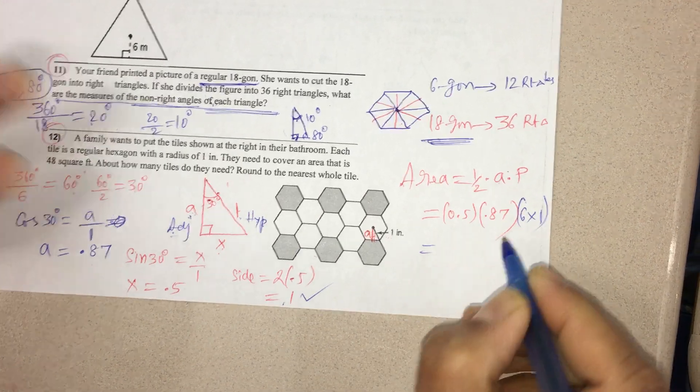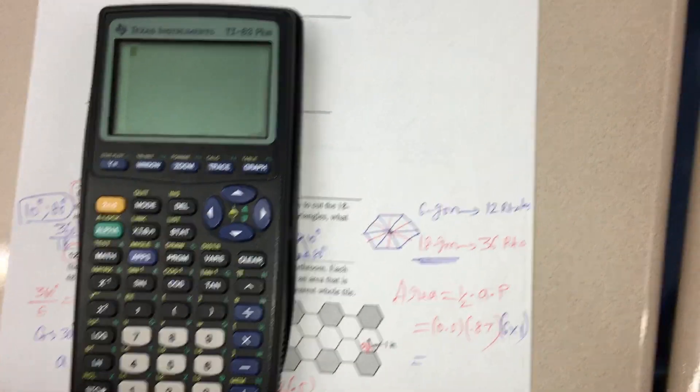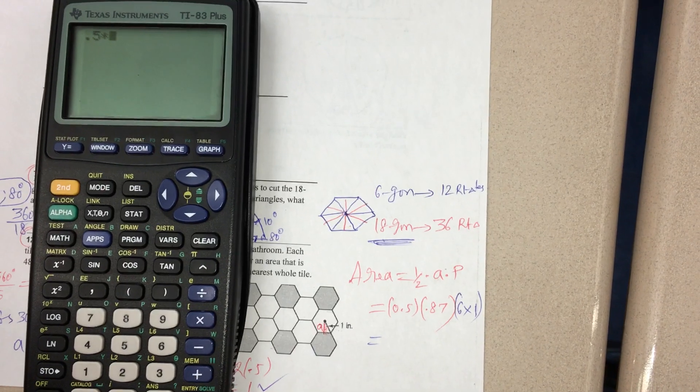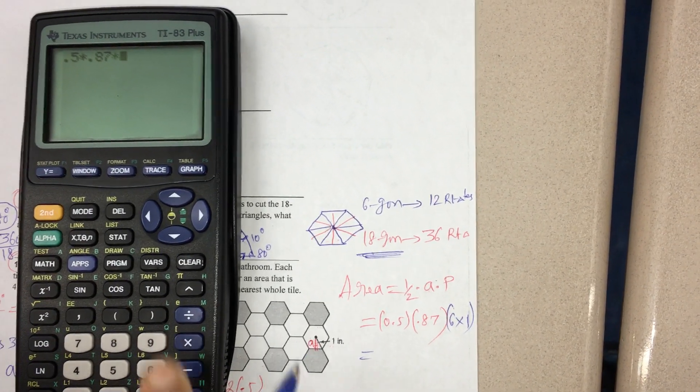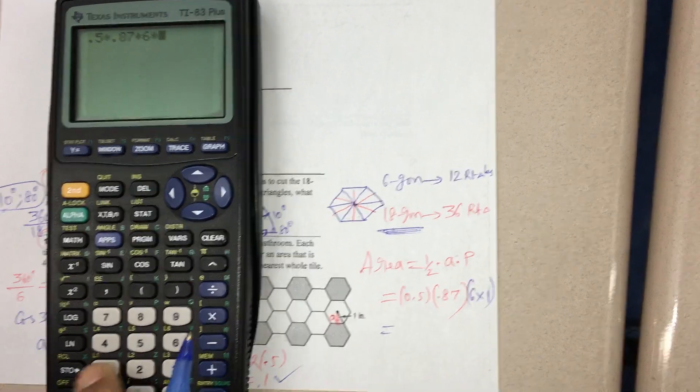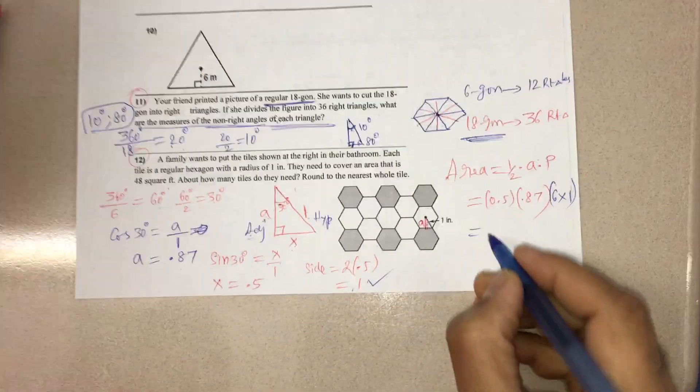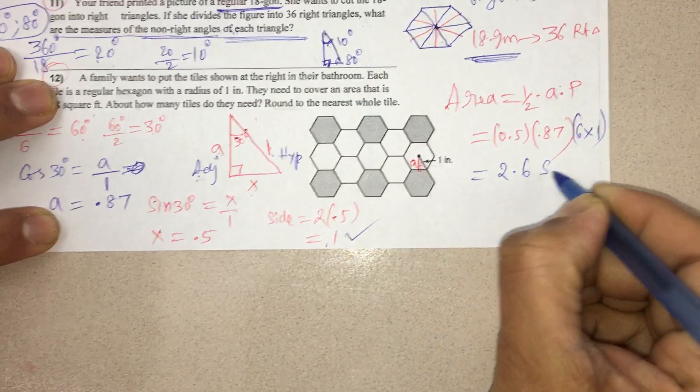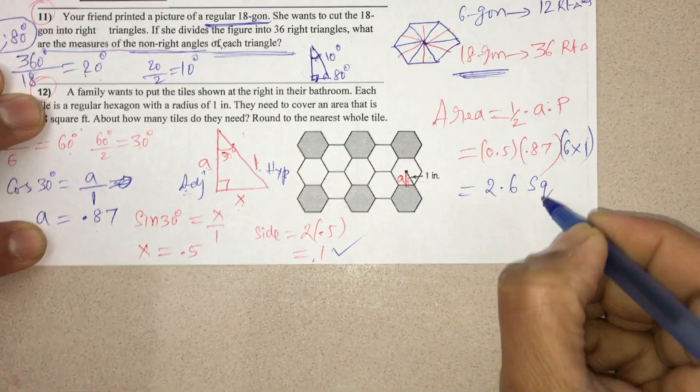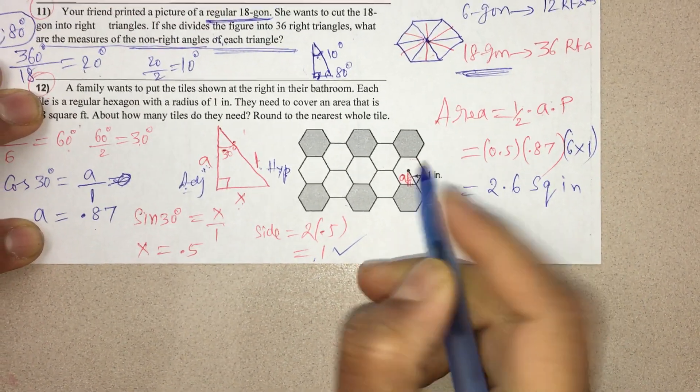If I multiply all these, I get the area like this: 0.5 times 0.87 times 6 times 1. When I multiply, I got 2.61, or 2.616, I can say, square inches. This is the area of each tile.